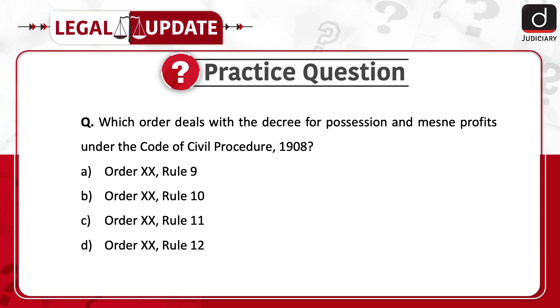Practice question: Which order deals with the decree for possession and mean profits under the Code of Civil Procedure 1908? (A) Order 20 Rule 9, (B) Order 20 Rule 10, (C) Order 20 Rule 11, (D) Order 20 Rule 12. Send us the answer in the comment section.